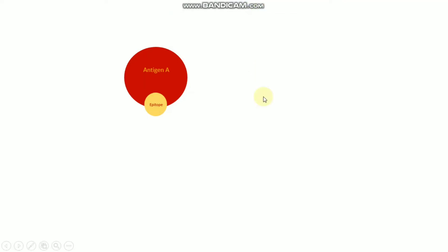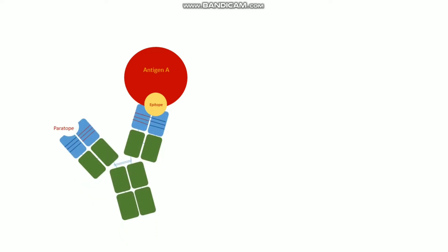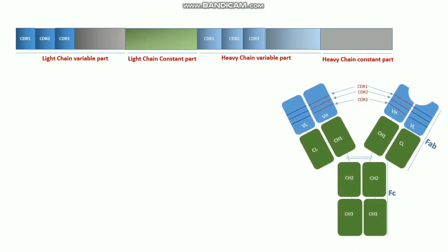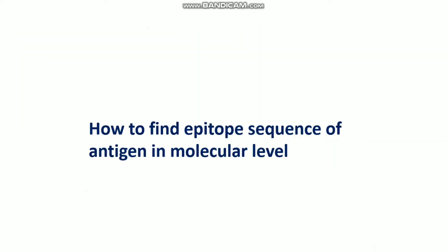Hello everyone, welcome back to my channel XGEN and Protein X. In my previous video series I already talked about the antibody structure, antigen-antibody binding, epitope and paratope, and I also showed how to find CDR1, CDR2, and CDR3 sequences of any antibody. In this tutorial video I will focus on how to find the epitope sequence.